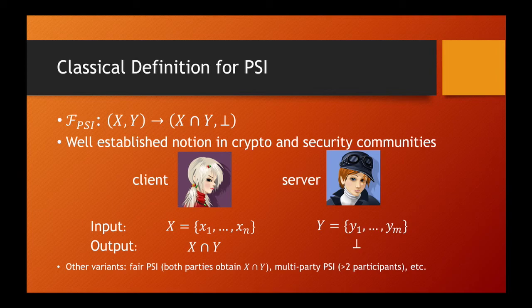The most typical setting is as follows. Two parties, Alice and Bob, have private sets X and Y respectively. In this asymmetric setting, Alice, who may receive the real output, is usually referred to as a client, and Bob is usually called the server. Very efficient PSI protocols have been proposed in top-tier conferences in the past few years.